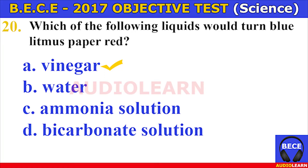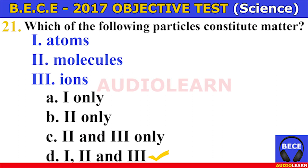Number twenty. Which of the following liquids will turn blue litmus paper red? A. Vinegar, B. Water, C. Ammonia solution, D. Bicarbonate solution. The answer is A. Vinegar. Which of the following liquids will turn blue litmus paper red? The answer is vinegar.